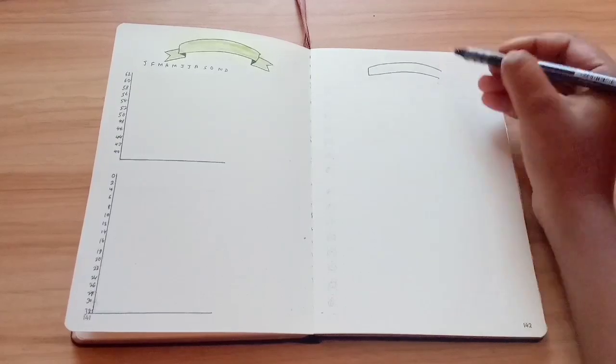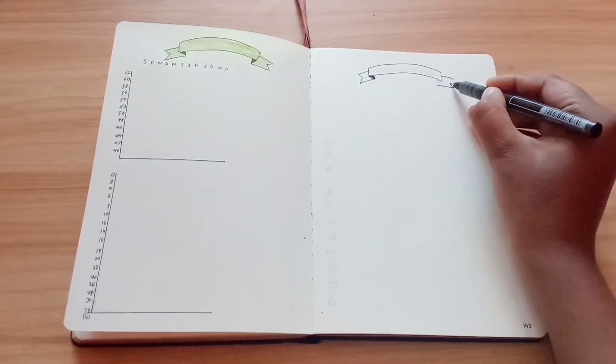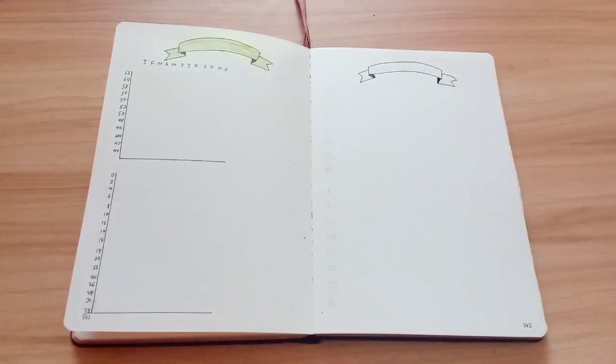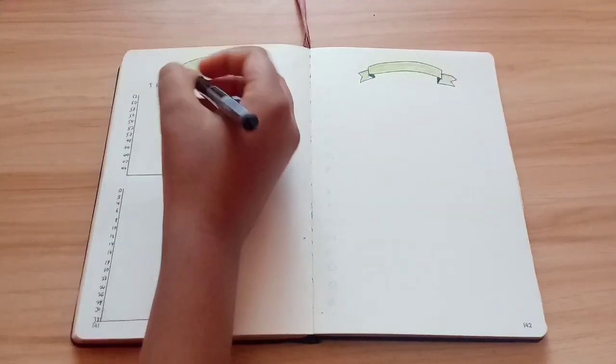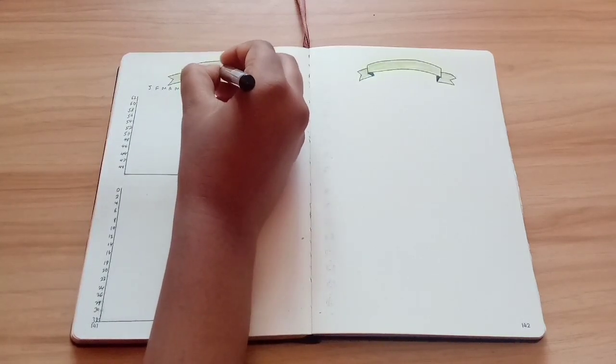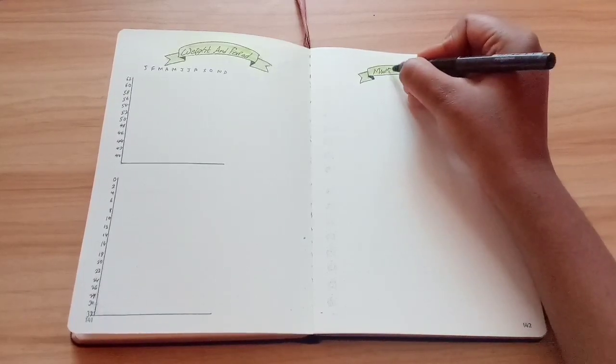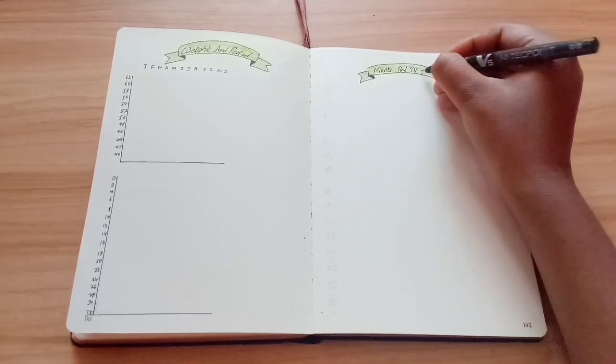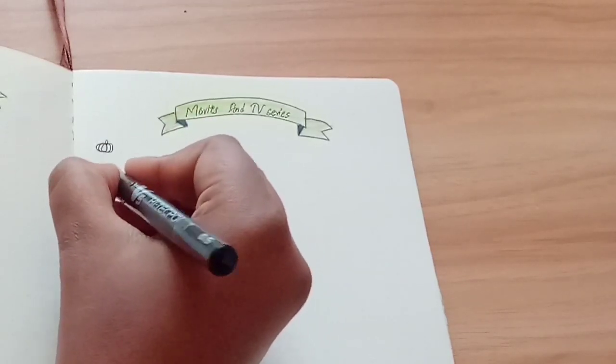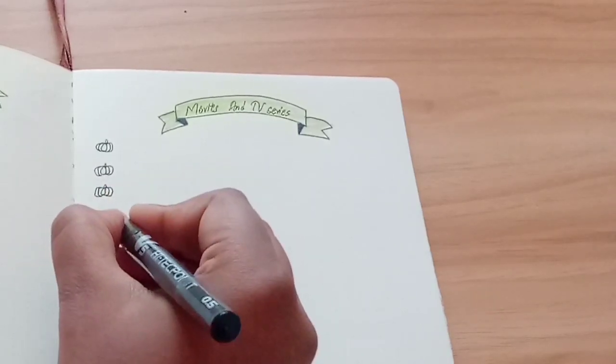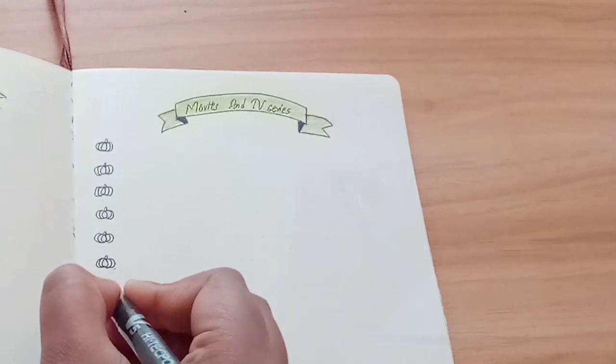This next spread is for movies and TV series. For this, I've made small pumpkins with five sections so that I can color the pumpkin as rating. So in that way, if I like the movie, I'll color the pumpkins in all five sections, and if I don't, then I will be coloring only one section. I hope that was clear.